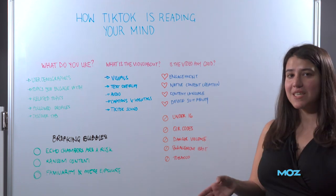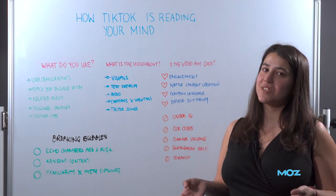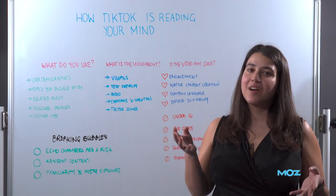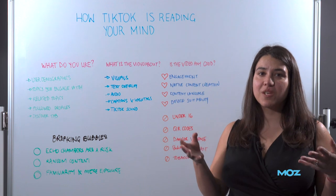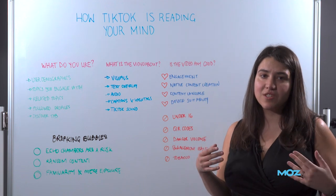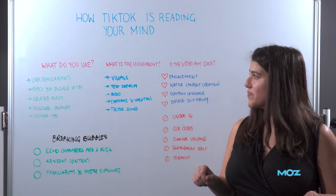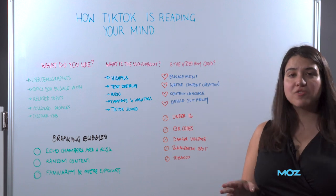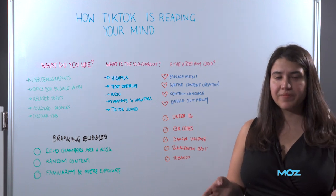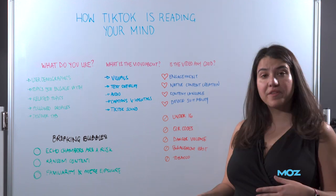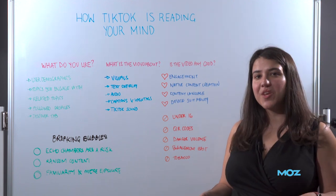The very first thing TikTok is trying to do is show you videos that interest you. They're trying to keep you in the app as long as possible, so they need to figure out what you like. How are they going to do it?